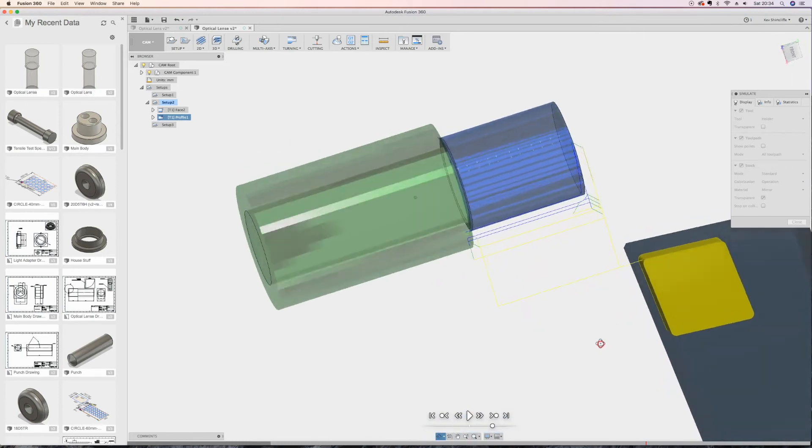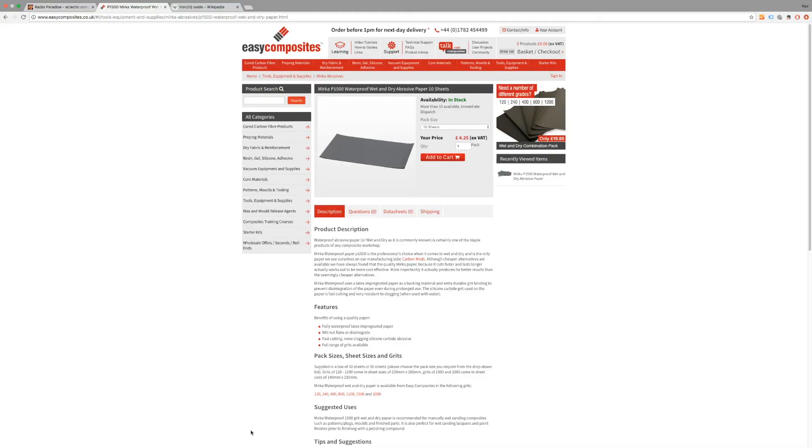So after we finished the CNC, we went on to the finishing. When the lens came out of the CNC lathe, it already had a brilliant finish on it because we used a really high speed and slow feed rate and flood coolant, so it was pretty good to begin with, but still not that optical finish we're looking for.